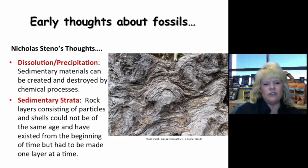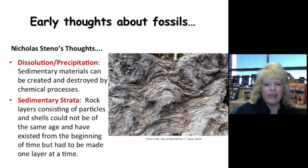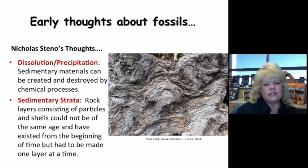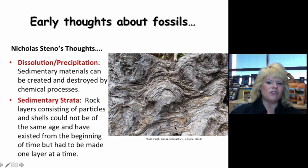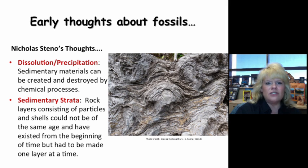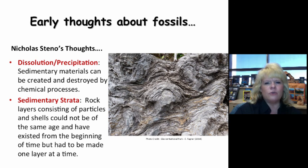Steno said that dissolution and precipitation can occur to sedimentary fossils or rocks found in sedimentary rock layers — that sedimentary materials can be created and destroyed by chemical processes, which we know to be true today. He also said that rock layers consisting of particles and shells must have been made one layer at a time, not all at once. Taking this layer of stromatolites in Glacier National Park, I have to look at its context, figure out the age based on stratigraphic and radiometric dating, and understand it as a stromatolite formed in a specific depositional environment — putting multiple clues together.